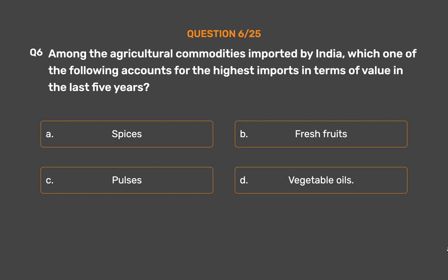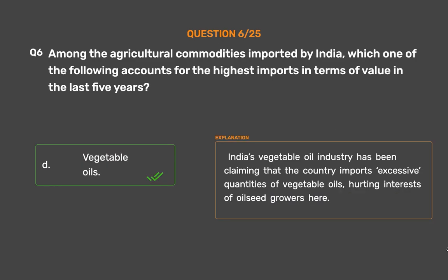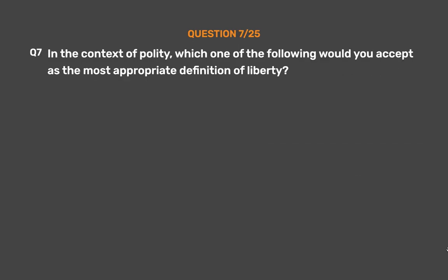The correct answer is Option D: Vegetable oils. India's vegetable oil industry has been claiming that the country imports excessive quantities of vegetable oils, hurting the interests of oilseed growers.